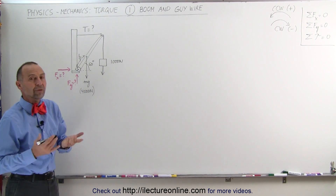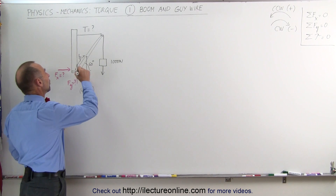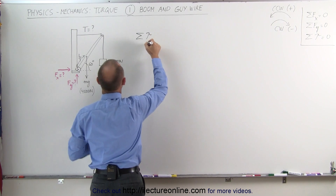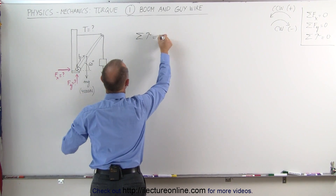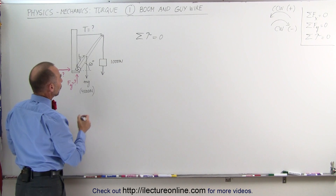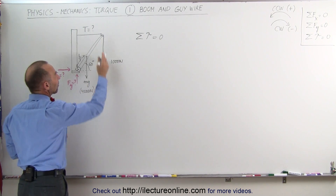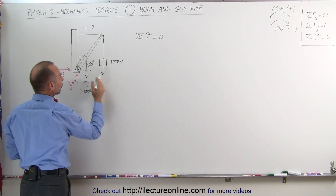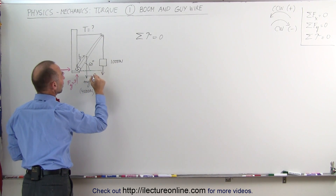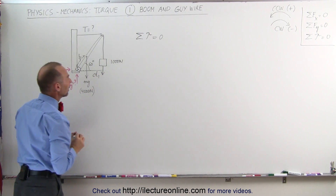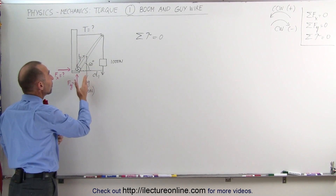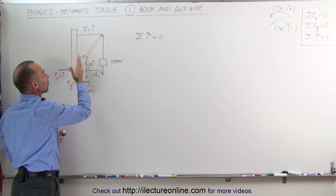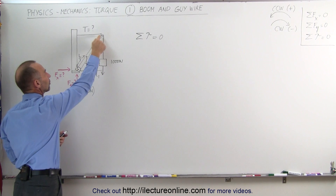We want to find the sum of all the torques relative to the pivot point, so we say the sum of all torques relative to that point must add up to zero. The first torque is caused by the weight hanging down from the edge of the boom. We need to find the distance from the line of action of the force to the pivot point — let's call that D1. The second torque is caused by the weight of the beam, which tends to be heavier at the bottom, so the center of mass is about one-third the distance from the bottom to the top of the boom.